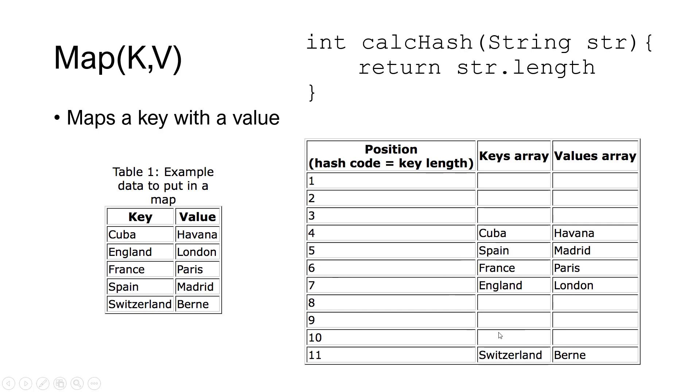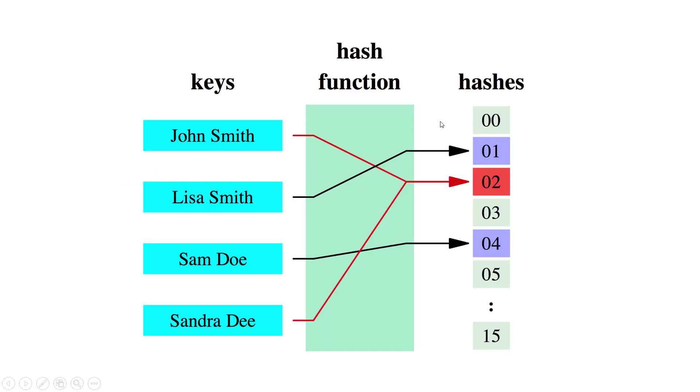And obviously we have a lot of countries that will have the same amount of letters. So how do we handle that? Well we can see another example here we get the hash function and some is going to map to number one, some is going to map to four and then we have maybe two that's going to map to the same one. So then we have a collision. So how do we handle this?